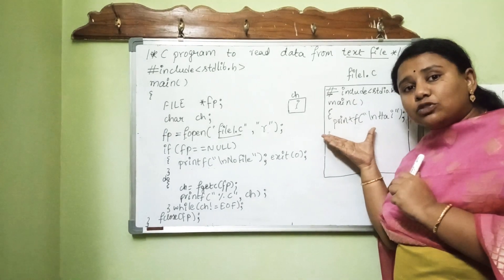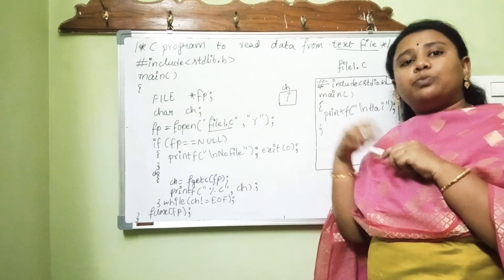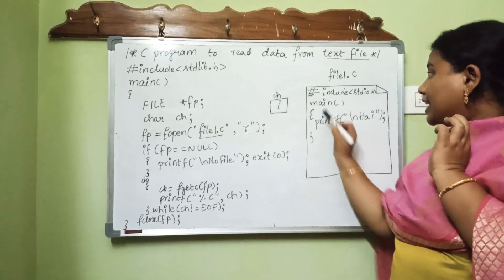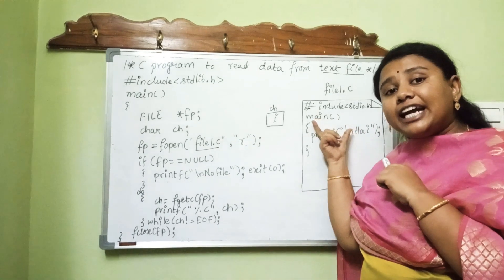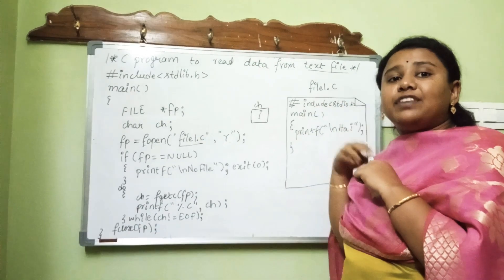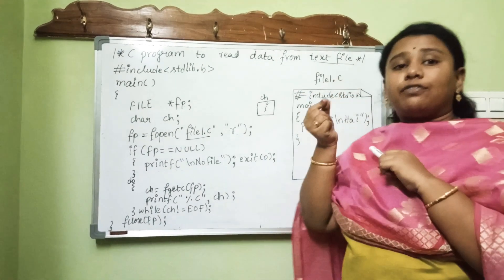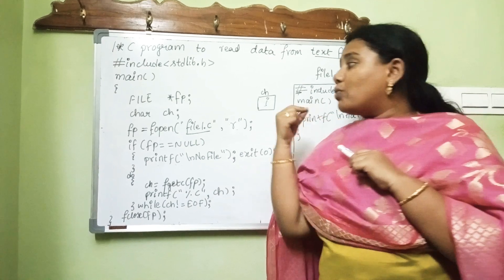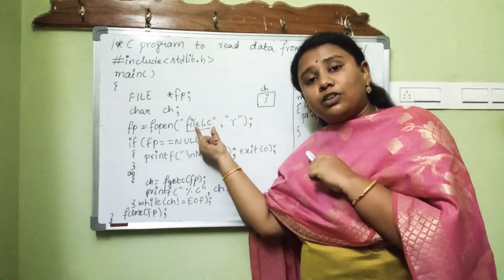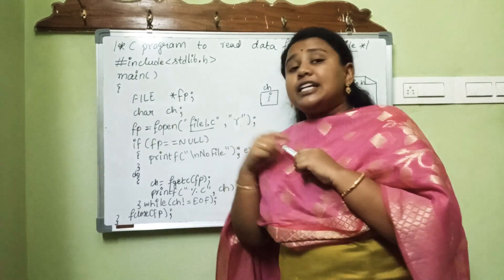Our task is to make the entire data printed on the monitor — on the output screen — not to open the file but to print its contents on the output screen. To do this, I have to open this file in read mode, because I already entered some data into it. My task is to read each and every line and character, so I open file1.c in read mode using the fopen function and assign the starting address to fp.